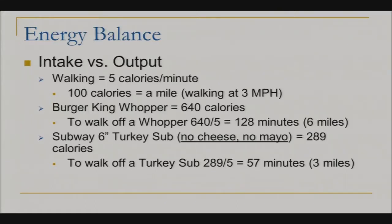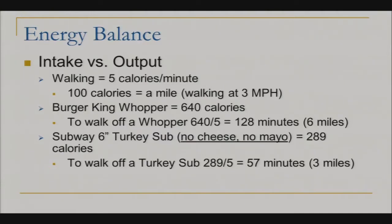It is about an energy balance — intake versus output. Let's look at an example of how much you would have to burn to work off some calories. Walking burns about five calories per minute. So to burn a hundred calories, you'd have to walk a mile at a three-mile-per-hour pace — that isn't a Sunday stroll in the park, you'd be walking at a pretty good clip. A Burger King Whopper contains 640 calories. To walk off that Whopper, dividing by five calories per minute, you would have to walk 128 minutes or six miles.